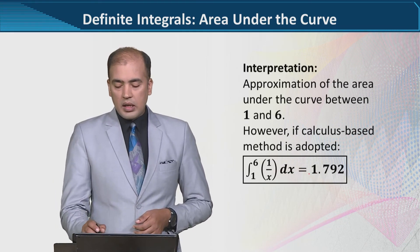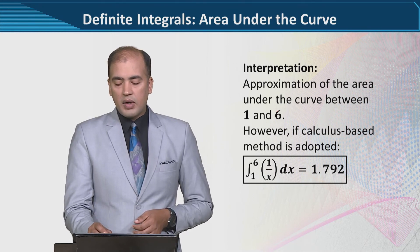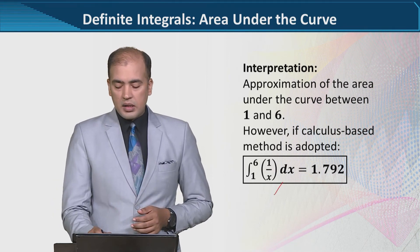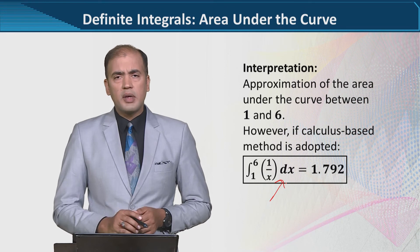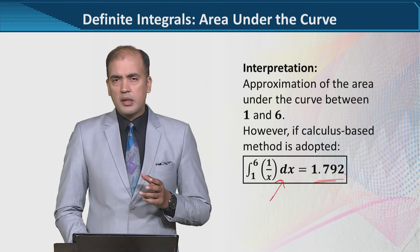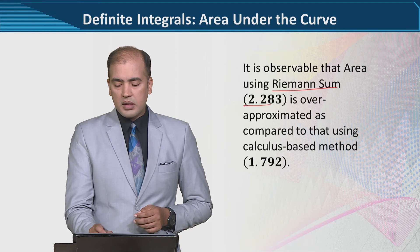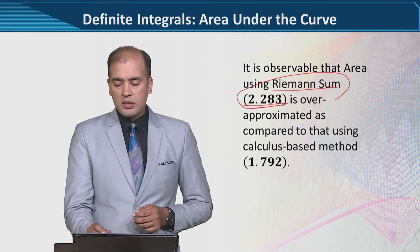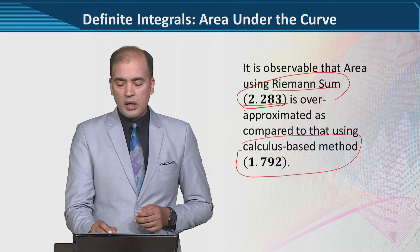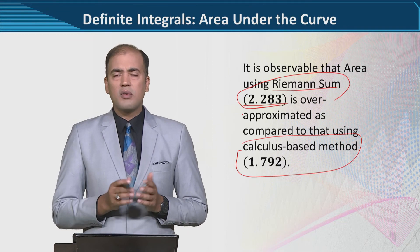Now the interpretation is that if we approximate it using this diagram between 1 and 6, the area is a certain value around 2.283. But if we solve it using the integration, the mathematical or calculus-based method, then the answer is 1.792. So there is a discrepancy. We can remove this discrepancy by considering that the answer coming from Riemann sum is this, and the answer from calculus-based method is this. So in other words, what we can see is Riemann sum has the tendency to overestimate the area.